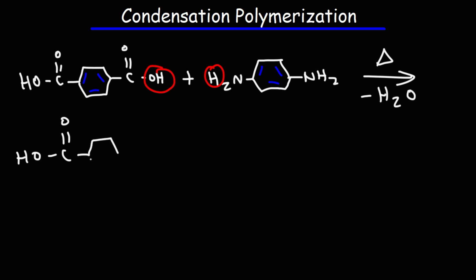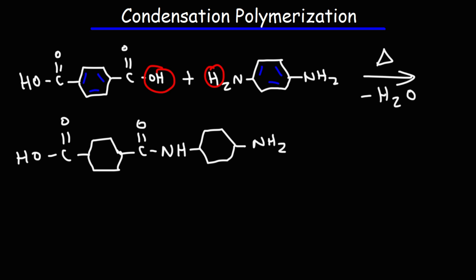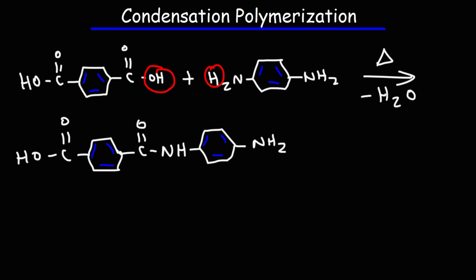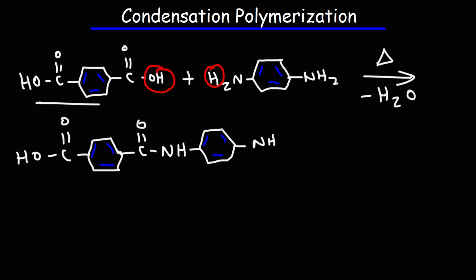So that's a condensation reaction — we now have two units combined into one. This reaction is not going to stop here, because we can react this part of the molecule with another 1,4-benzene dicarboxylic acid. If we do that, we get rid of one hydrogen from the NH2 and the OH group, forming another amide, drawn in the other direction.